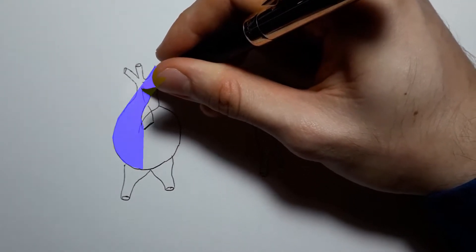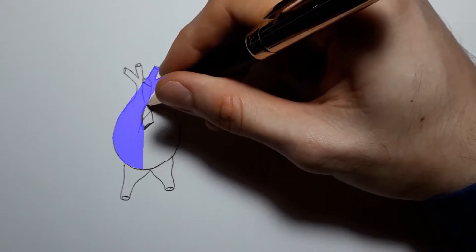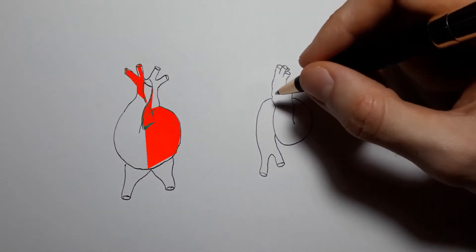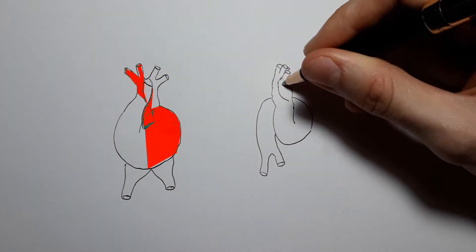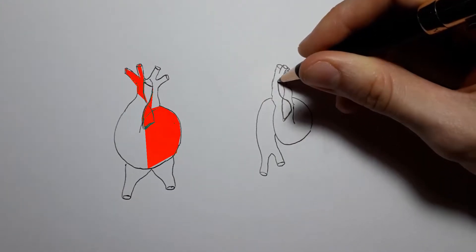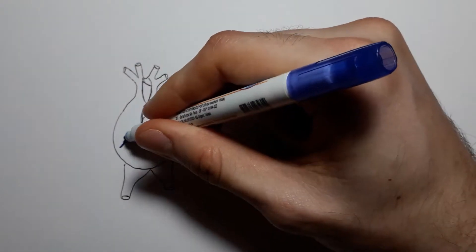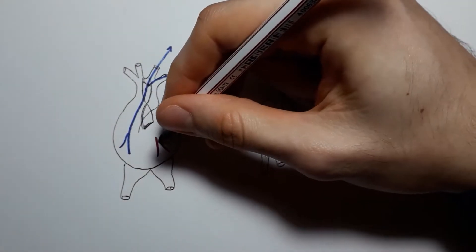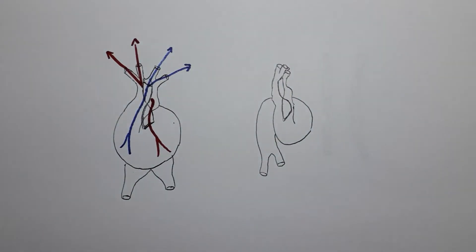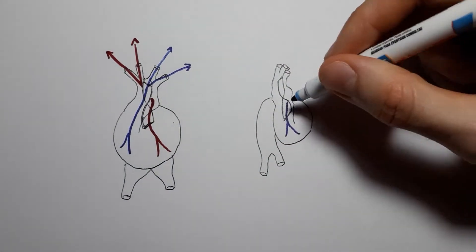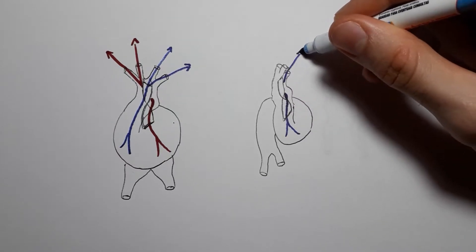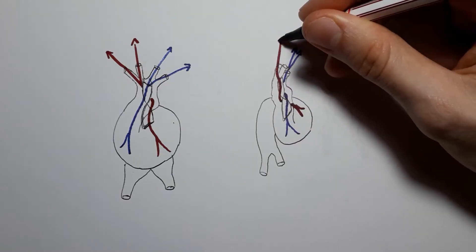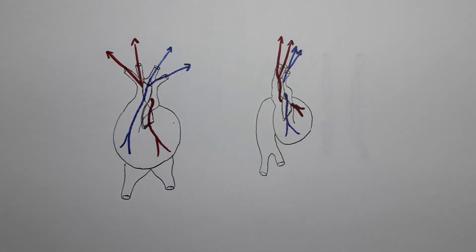The pulmonary trunk is supposed to carry deoxygenated blood from the right ventricle to the lungs, whereas the aorta is supposed to carry oxygenated blood from the left ventricle to the systemic circulation. In order to divide the truncus arteriosus into these two structures, neural crest cells migrate to the conotruncal and bulbar ridge and grow the aortic pulmonary septum, a spiral structure that starts dividing outflow from the left and right ventricles around the eighth gestational week.